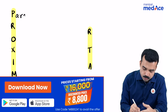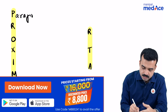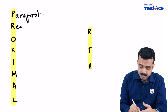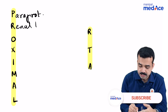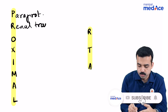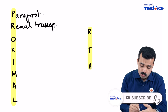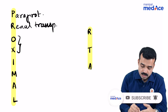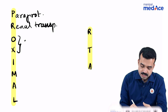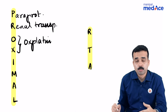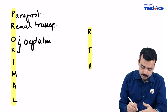P would stand for paraproteinemias like multiple myeloma. R stands for renal transplantation, that is post-transplant. OX would stand for oxaliplatin and cisplatin. These drugs cause type 2 proximal RTA.